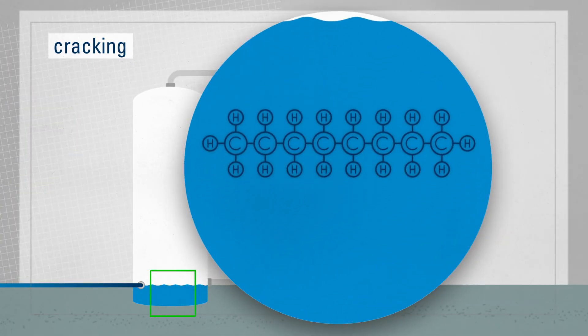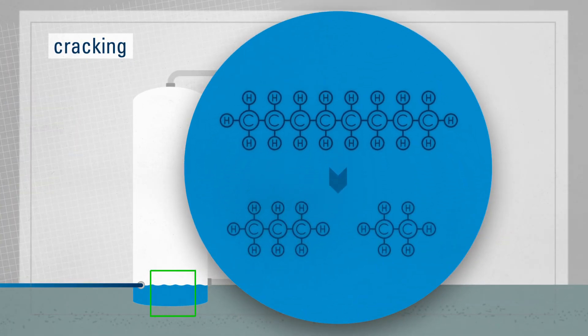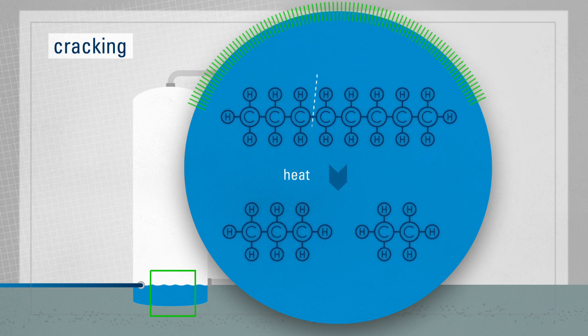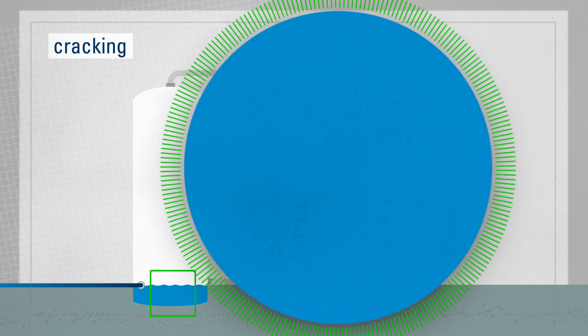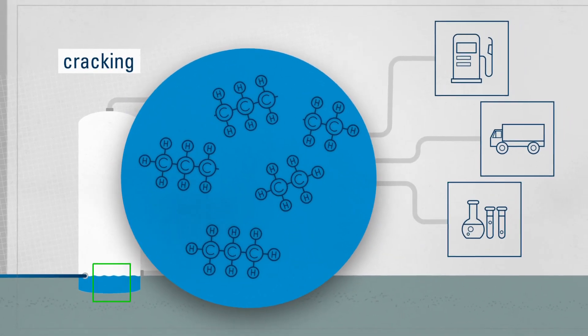With cracking, the large chains of hydrocarbon molecules are used to make smaller chains. Heat or a catalyst is applied to produce components that are used as additives for gasoline, diesel, and petrochemicals.